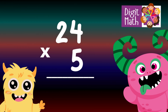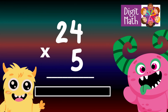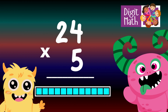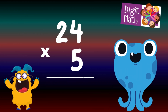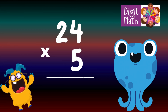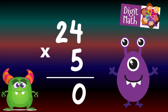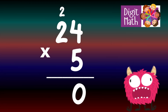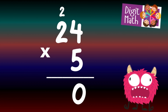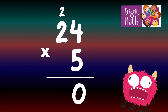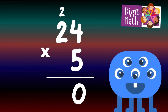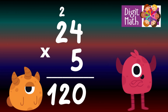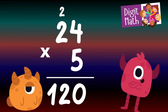24 times 5 — time to think. To solve, multiply 24 by 5. In the Units column, multiply 5 by 4, which equals 20. Place 0 in the Units column and carry over 2 to the Tens column. In the Tens column, multiply 5 by 2, which equals 10. Add the carried over 2 to 10, making 12. Place 12 in the Tens and Hundreds column. So the final result is 24 times 5 equals 120.